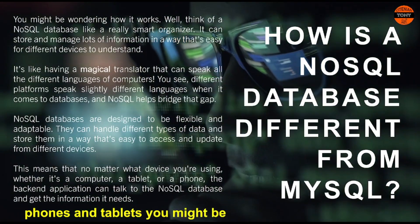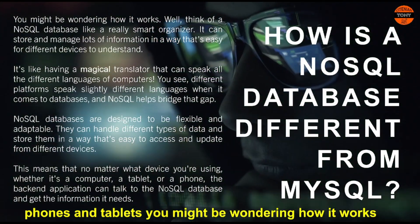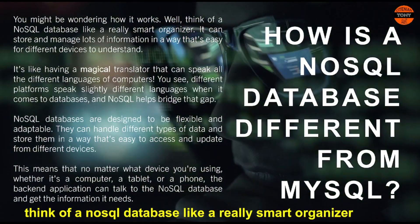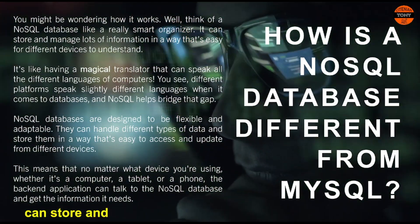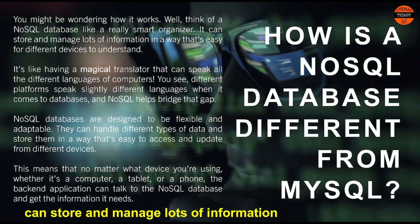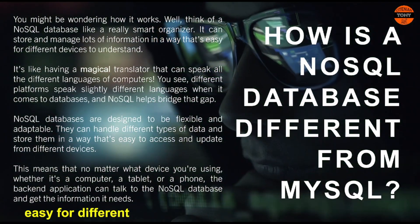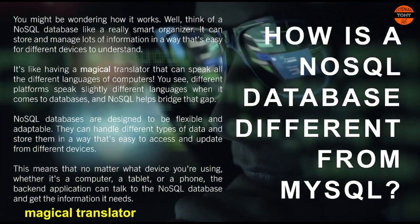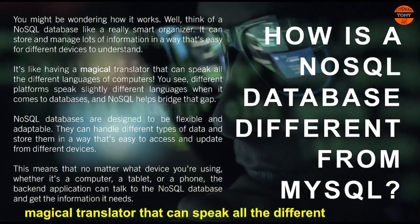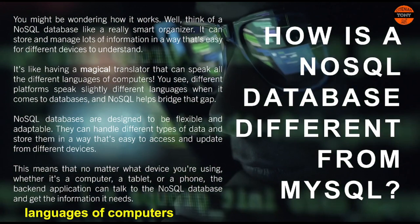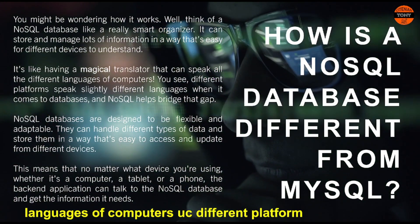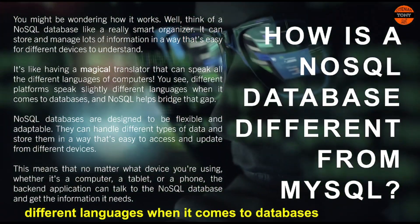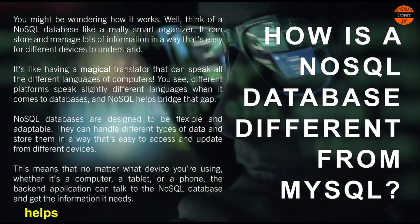You might be wondering how it works. Think of a NoSQL Database like a really smart organizer. It can store and manage lots of information in a way that's easy for different devices to understand. It's like having a magical translator that can speak all the different languages of computers. Different platforms speak slightly different languages when it comes to databases, and NoSQL helps bridge that gap.